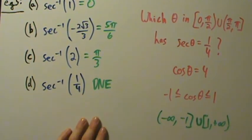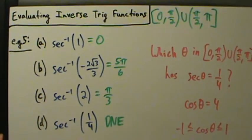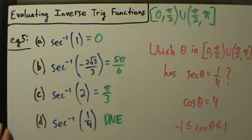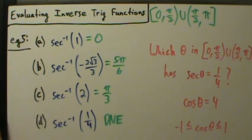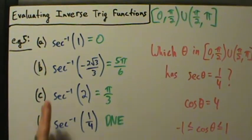That's part D. So that's example 5 of evaluating inverse trig functions, covering the inverse secant function.